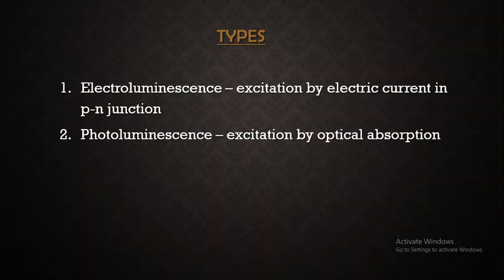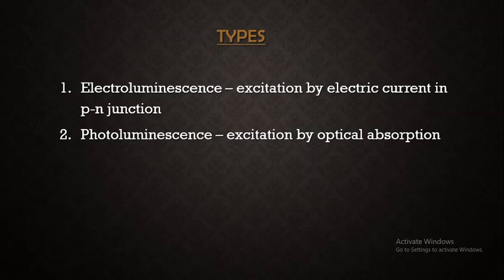The second type is photoluminescence. Here, the excitation is by optical absorption. This is the main type of luminescence we are going to discuss in today's class, because we are studying this under the optical properties of semiconductors — meaning the stimulus has to be a photon — and how the luminescence process occurs with respect to that is what we are going to study. So the main concept is photoluminescence.